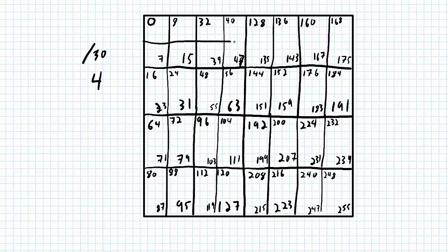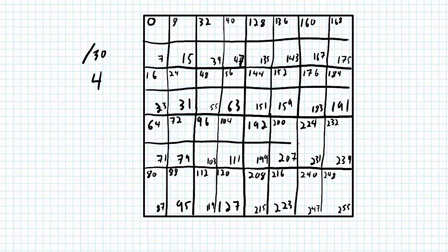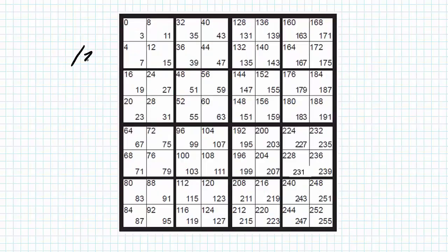I draw the lines in to show the splits, but since I'm running out of space to draw numbers in, I'm going to copy in a new typed-out box. So here's my last split, which is a slash 30 with four IP addresses per network.